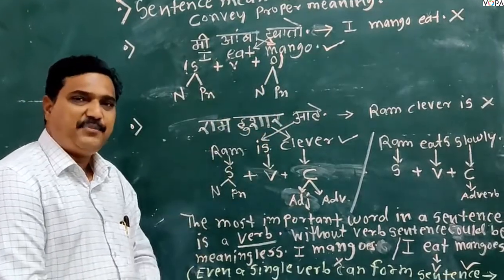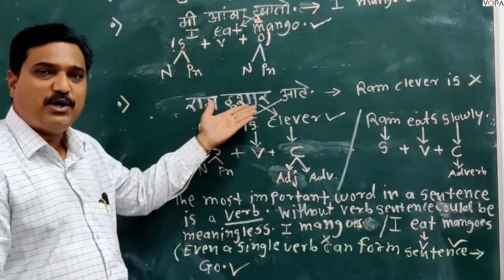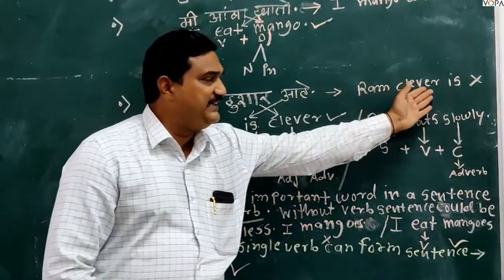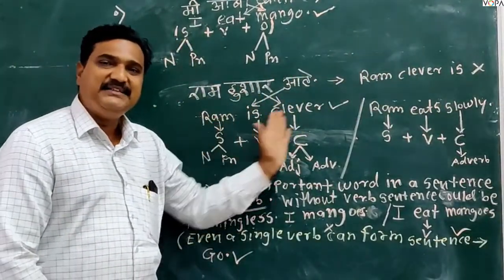Look at this second example of Marathi. Ram hushar ahe. In this sentence, if we translate word to word, Ram clever is. This is wrong sentence formation. The correct sentence formation is Ram is clever.